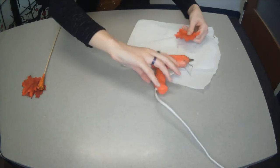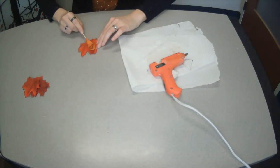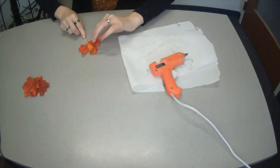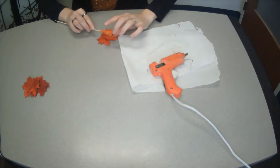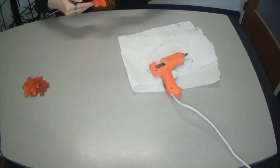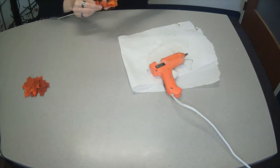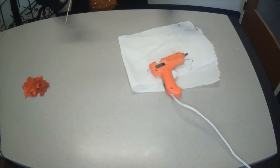So we're gonna put a line of glue along the very bottom edge of the leaf, and we're gonna line those up. And then we're going to wrap around like so.